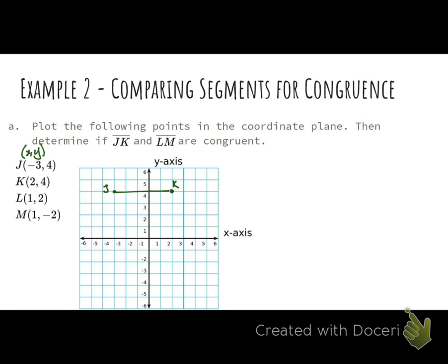L is 1, 2. So you go 1 in the X direction, up 2, 1, 2, 1, 2. And then you have M, 1, negative 2. 1 in the X direction, negative 2, down 2. We plot that point. We connect it with our line segment. I didn't label either of them, which would make this incorrect. L, M.